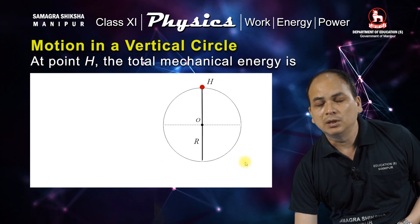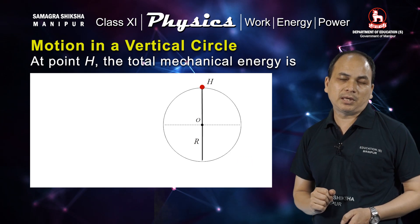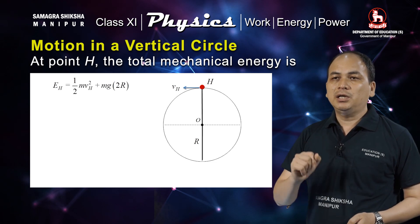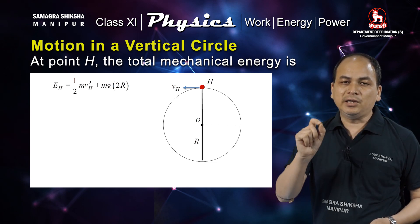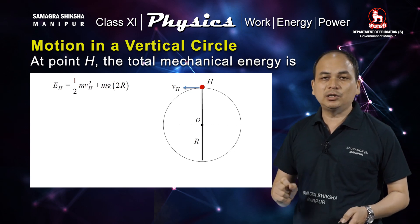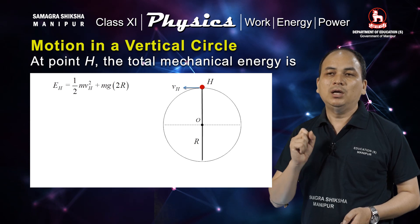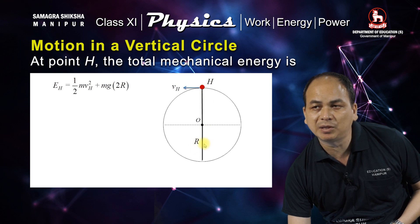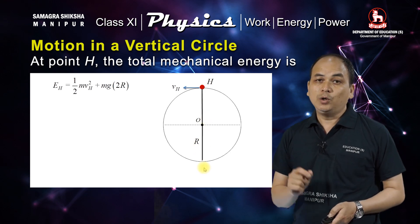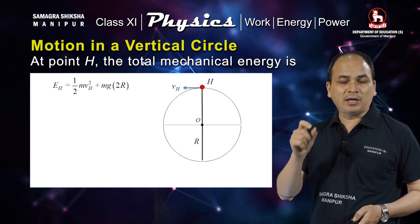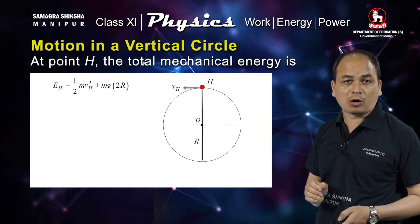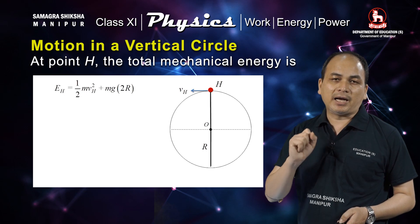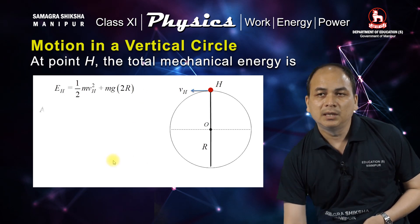Let us assume that at the lowest point the potential energy is zero. Using conservation of mechanical energy, the total mechanical energy equals kinetic energy plus potential energy. At the highest point, KE = ½mVh² and the height from the lowest point is 2r, so PE = mg(2r).